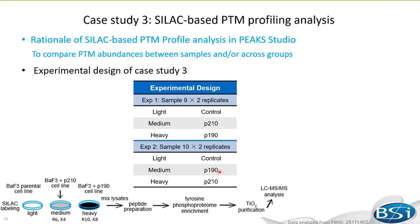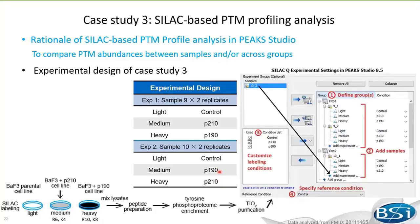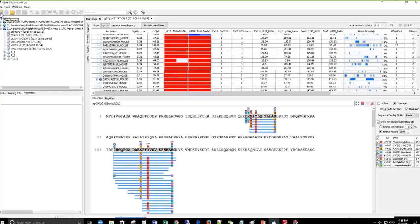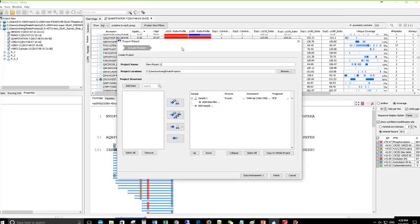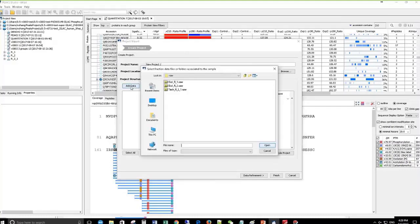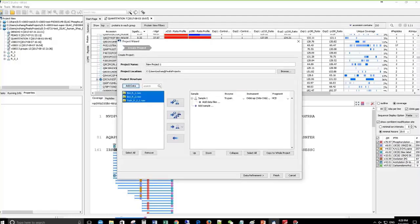Here is how PICS Q is set up accordingly. Three conditions are specified: control, P210, and P190, each group including two repeats. In experiment two, the medium channel is for P190 and the heavy channel is for P210. By clicking the New Project button, you can start uploading your data and begin the analysis. For this demo, I will use three technical replicates for a one-group analysis case study.